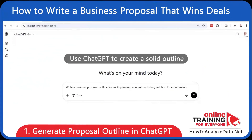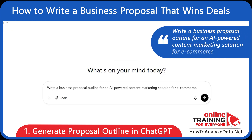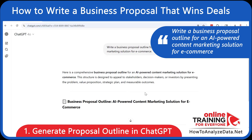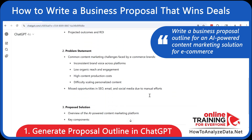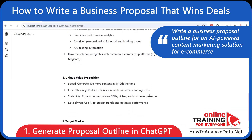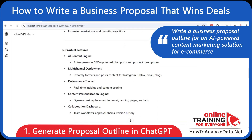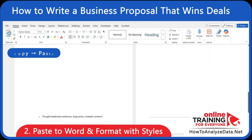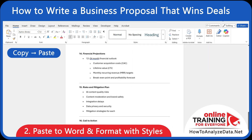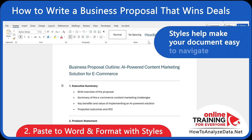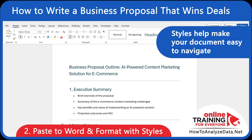First, let's use ChatGPT to generate a solid outline. We'll ask ChatGPT to write a business proposal outline for an AI-powered content marketing solution for e-commerce. This gives us all the key sections — executive summary, problem, solution, timeline, budget, and call to action. Now we can paste this into Word and apply heading styles to structure the proposal. Styles help make your document easy to navigate, especially when clients are just glancing at it.